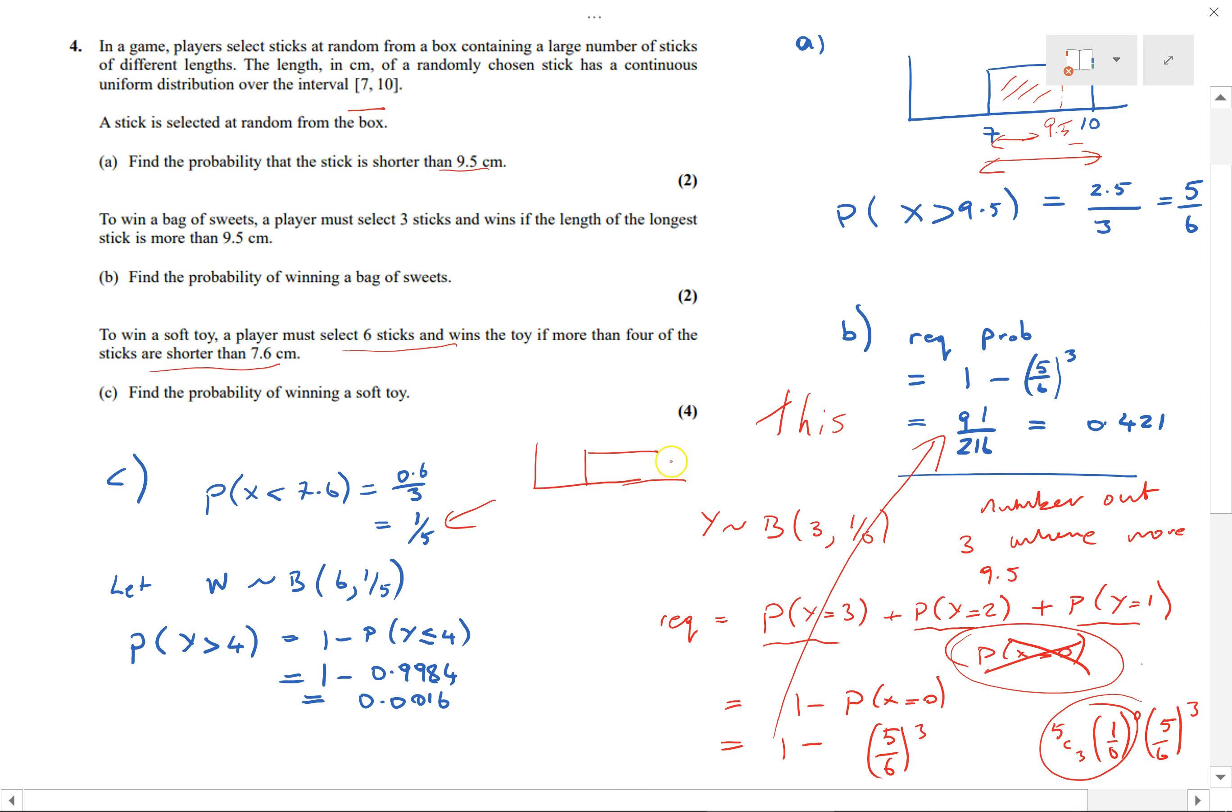You can see that from the graph. 7.6—basically this distance 0.6 over the whole, which is 3—that's 1/5. So this is being done six times and we want the probability that more than four of the sticks are shorter than 7.6.